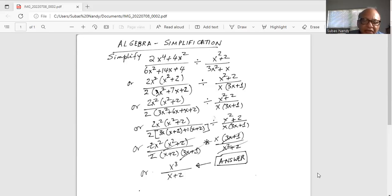Now we cancel out the common factors. x square plus 2 goes out with x square plus 2. 3x plus 1 in the numerator goes out with the 3x plus 1 in the denominator, and there's a 2 in the numerator and the 2 in the denominator. They cancel out.